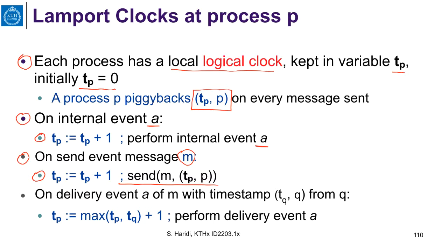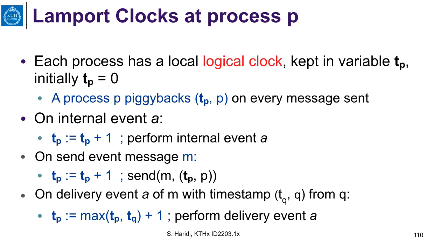If the event is a delivery of a message M with timestamp tq from process q, then the logical clock is updated as follows: take the local clock of process p, take the clock in the message coming from q, take the max of these two, and increment by one. After that, the process performs the delivery event. Note that the logical clock is updated before executing the action associated with the event.